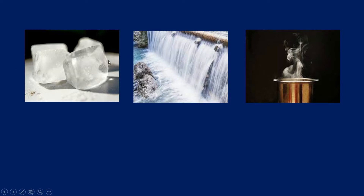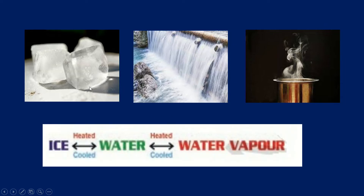Let us observe all three. In the first picture we have ice, in the second picture we have water, and in the third picture we have water vapour. If ice is heated, it turns into water. If water is heated, it turns into vapour. If vapour is cooled, it turns into water. If water is cooled again, it turns into ice. It is a reversible reaction.